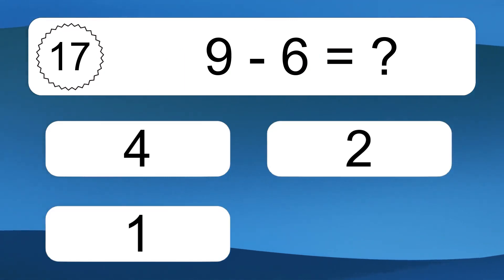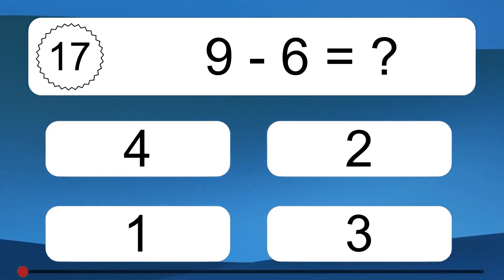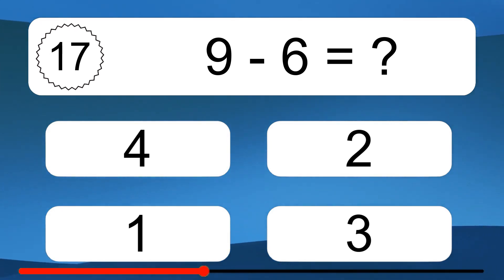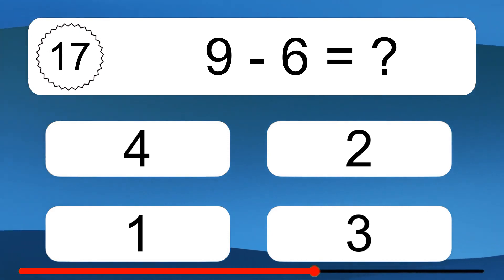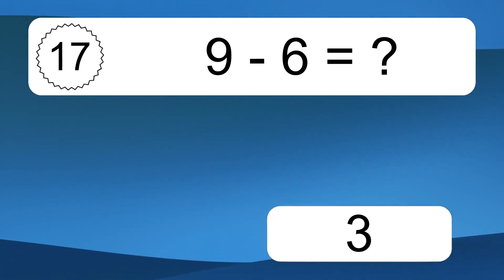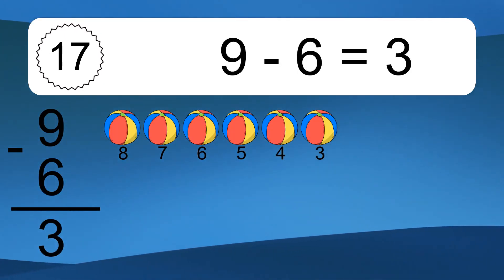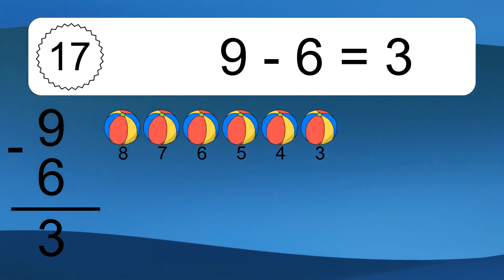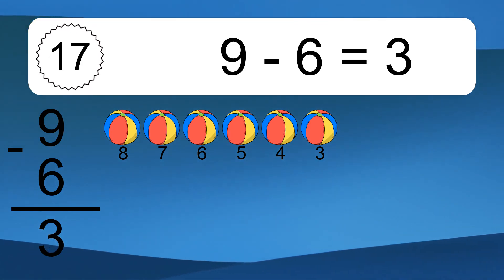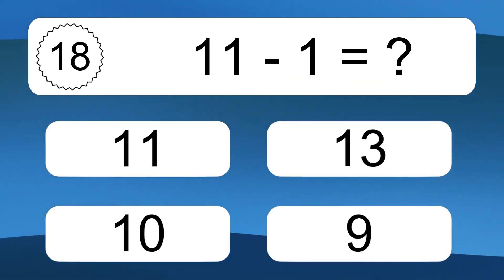9 minus 6 equals what? 9 minus 6 equals 3. Let's count it. 8, 7, 6, 5, 4, 3.